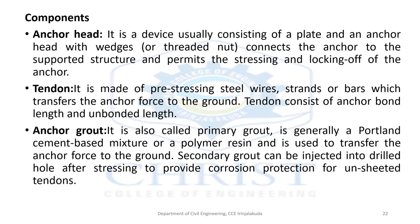The components of a ground anchor are: the anchor head, tendon, and anchor grout. The anchor head is a device consisting of a plate and anchor head with wedges that connects the anchor to the support structure, permitting stressing and locking of the anchor. The tendon is made of pre-stressing steel wires, strands, or bars that transfer the anchor force to the grout; it consists of the anchor bond length and unbonded length. The anchor grout, also called primary grout, is generally a Portland cement-based mixture or polymer resin used to transfer the anchor force to the ground.